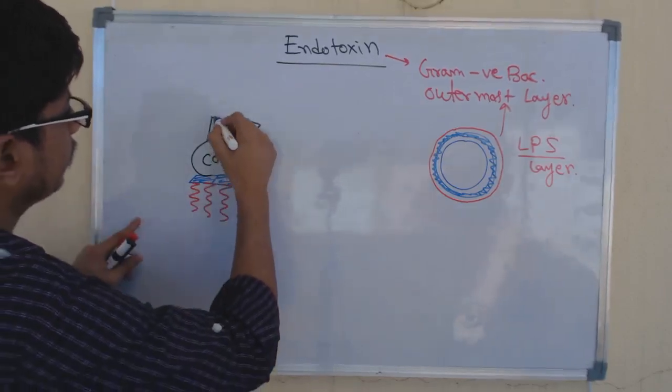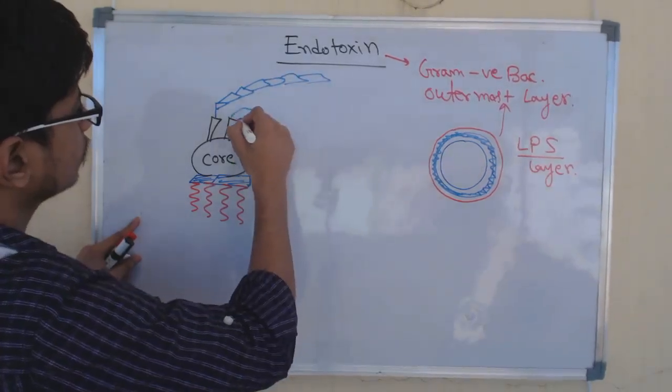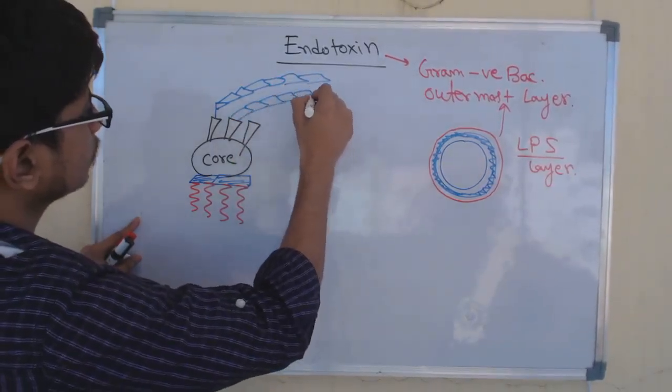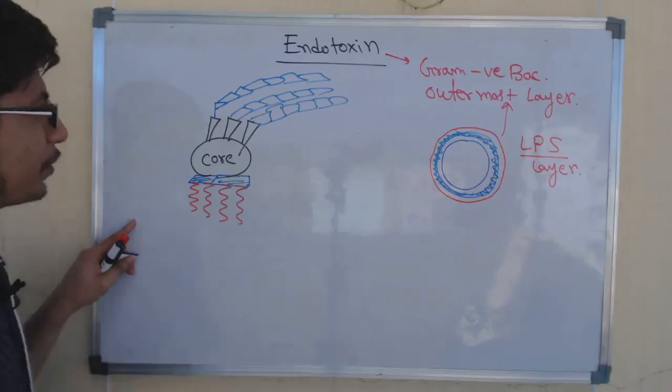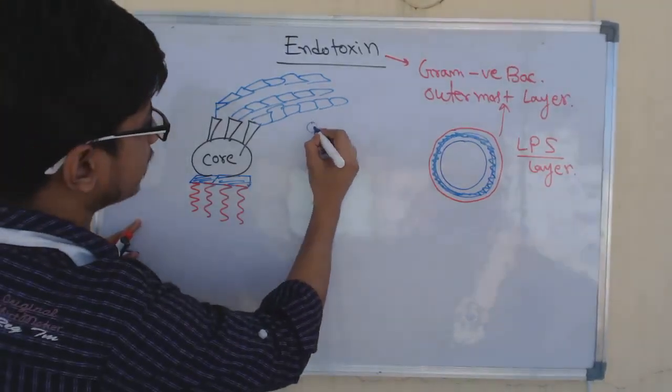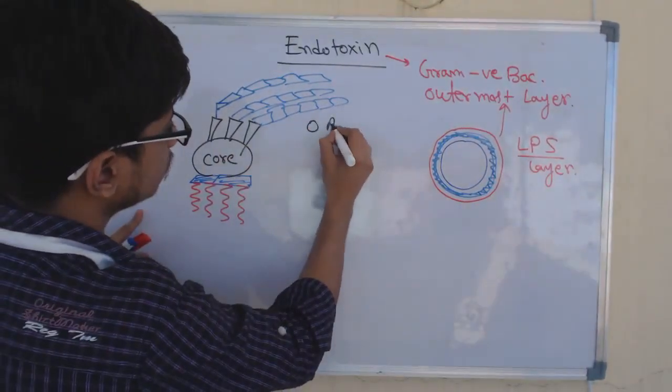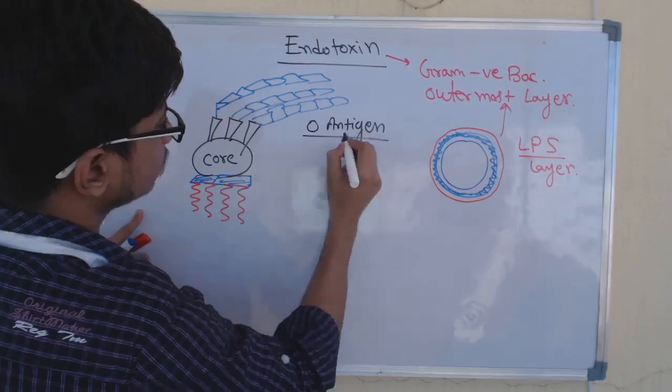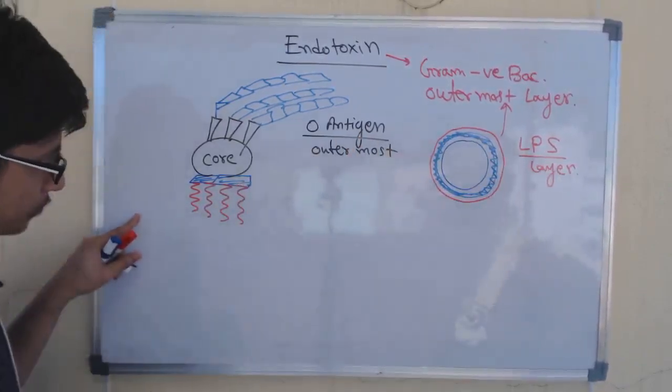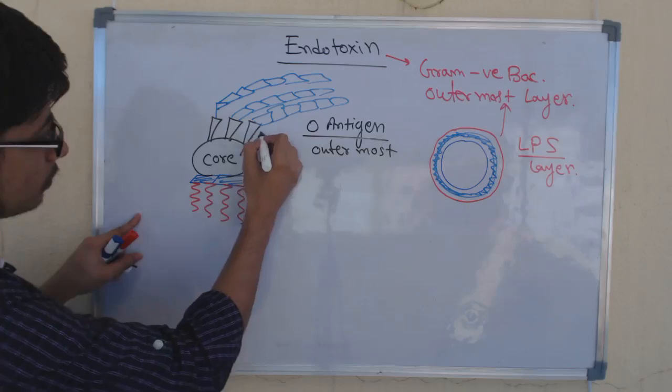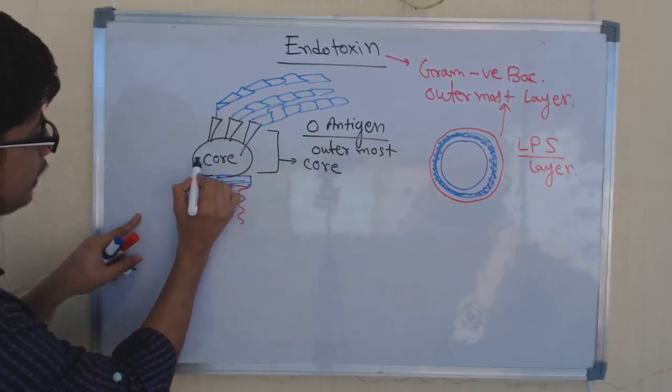This is known as O antigen—the outermost part is known as O antigen. The outermost part which is facing outside. The inner part, this whole part, is known as the core, but it has two different names: this is inner core and this is outer core.